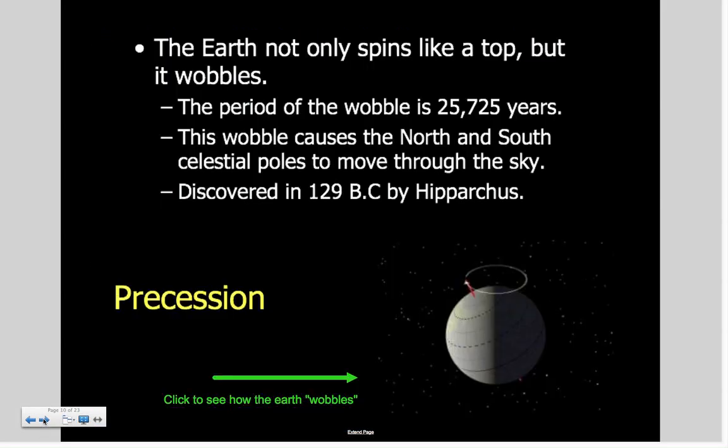This gives us different temperature zones and differences in our seasons. The Earth does wobble a little bit. It doesn't spin straight like a top—because it's tilted on its axis, it has a little bit of wobble.